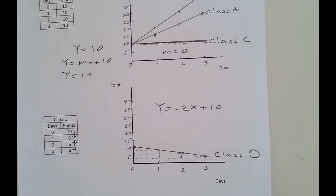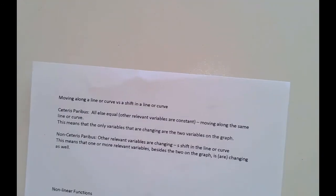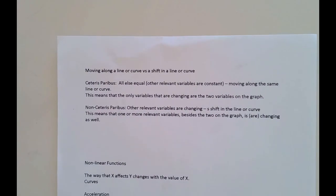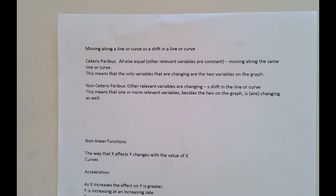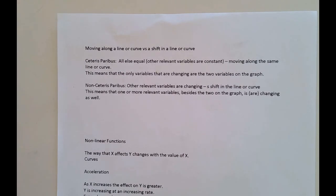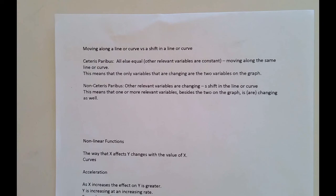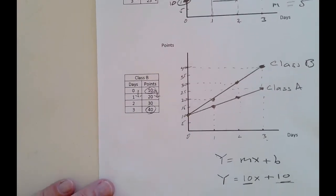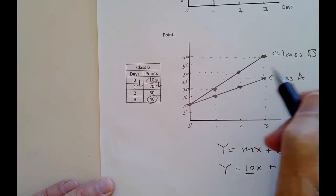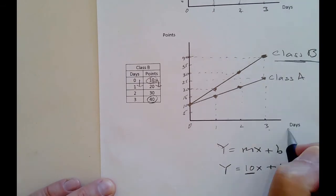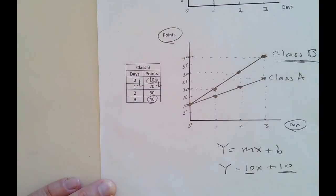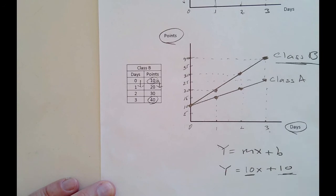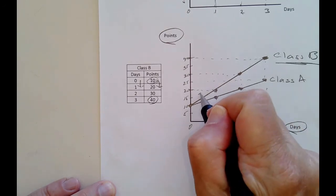Now we're going to look at non-linear graphs. Before that, let's talk about moving along a curve versus a shift in a line or curve — there are two kinds of changes. When we move along class B, we're only changing two variables: the days and the points. All other variables that can affect your test score are held constant. Moving along the line means we're changing only those two graphed variables.